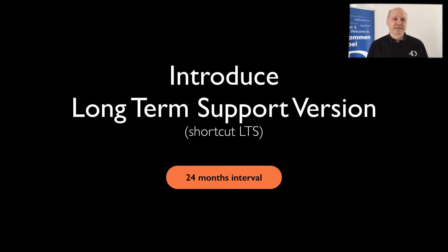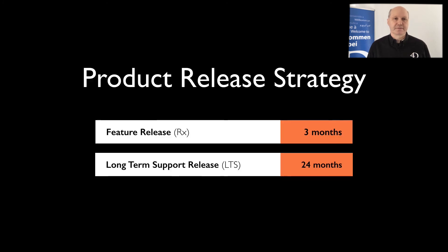In feature releases, we also use new APIs to prepare for new operating systems, especially on Mac. We do constantly refactor our codebase, and this work goes into the feature release. None of this happens for LTS versions, which produces less risk for backward compatibility, but may reduce compatibility for future OS releases. So: LTS every 24 months, feature release every 3 months — meaning we now have 8 feature releases, R2 to R8, before introducing the next LTS version including all its features.